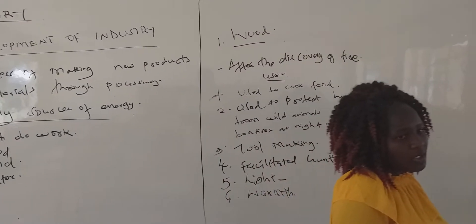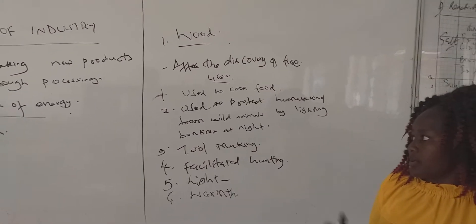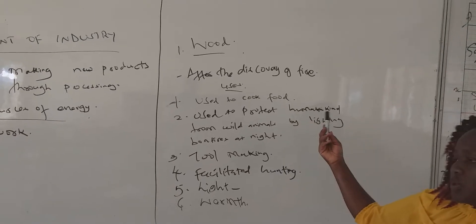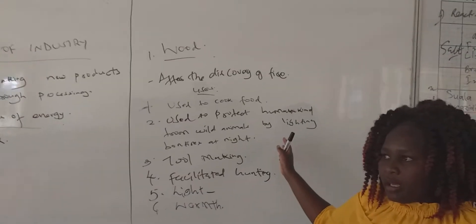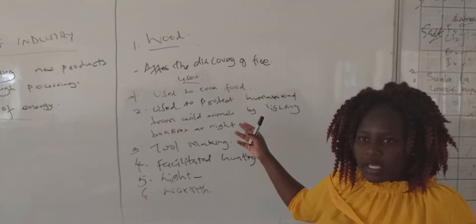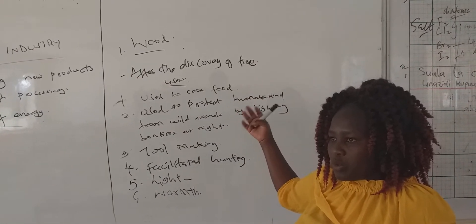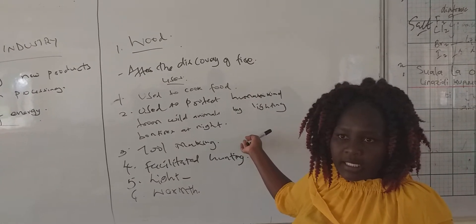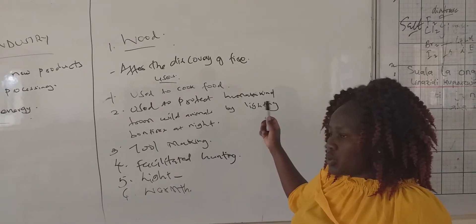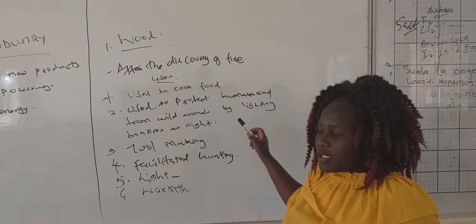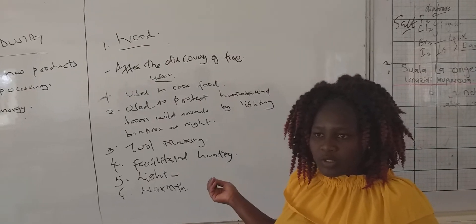Those are some of the uses of wood energy. Point number one, it was used to cook food — I'm referring to that early time, because those were the early sources of energy. Another use: it was also used to protect humankind from wild animals.